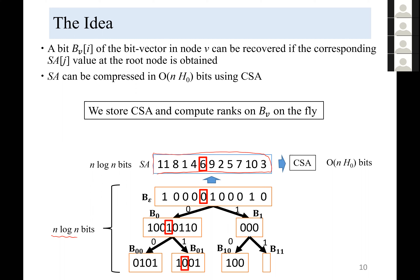We can compress the suffix array into the compressed suffix array. The suffix array uses n·log(n) bits, but it can be compressed into O(n·H_0) bits. Instead of storing the wavelet tree explicitly, we store only the compressed suffix array and compute ranks on the bit vectors of the wavelet tree on the fly from the compressed suffix array.